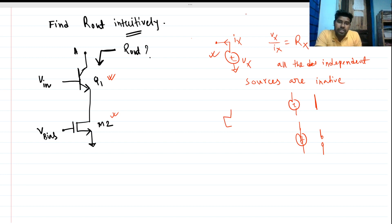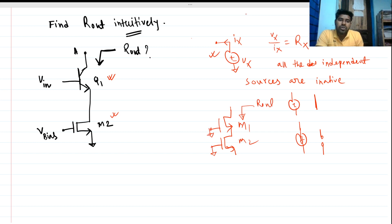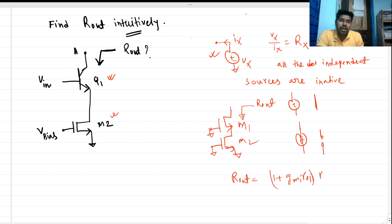Let me draw the first case for the intuitive analysis. Basically if we have that circuit, this is M1, this is M2, and we are looking from here — this will be ground for R_out measurement. This is a pretty common circuit called a cascode structure, and we know the output impedance of a cascode structure is R_o1 plus gm1·ro1·ro2 plus ro1.